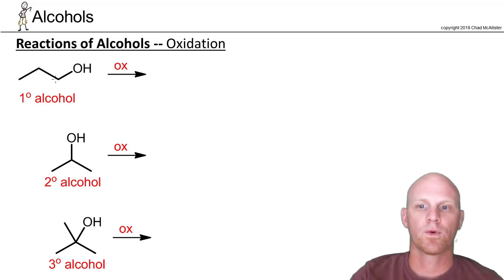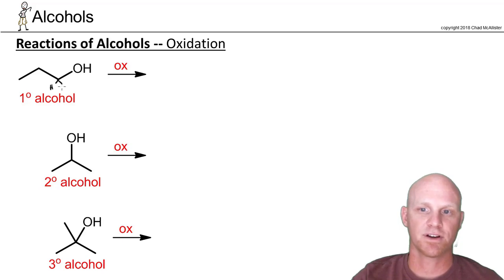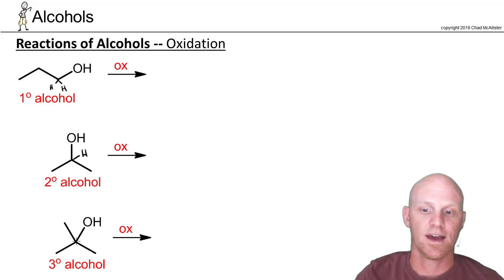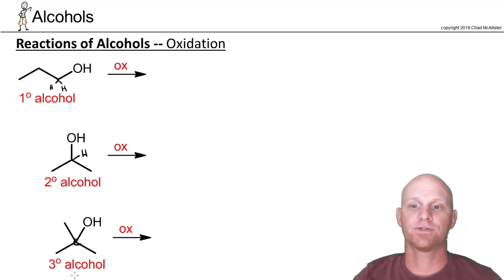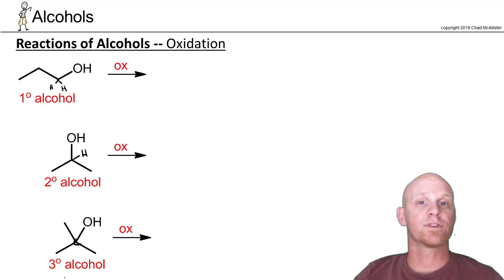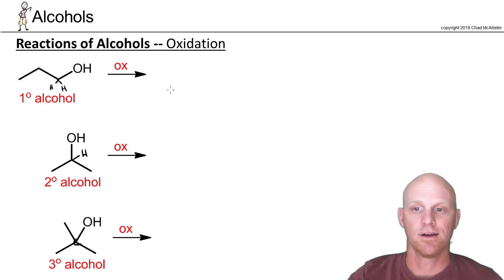Before we worry about what reagent to use, I want to point out a couple things about oxidation reactions. We're going to focus on the carbon with the hydroxyl group. In a primary alcohol, that carbon has two hydrogens. In a secondary alcohol, that carbon has one hydrogen. And in the tertiary alcohol, it does not have any hydrogens. What we're going to do is sequentially replace a bond to one of the hydrogens with another bond to oxygen.